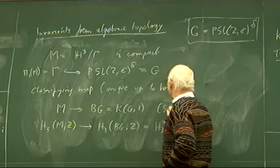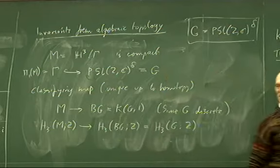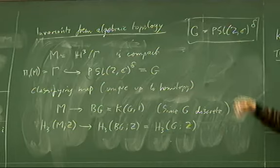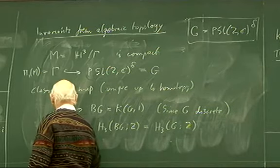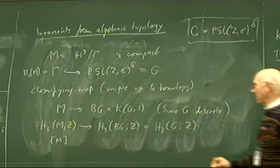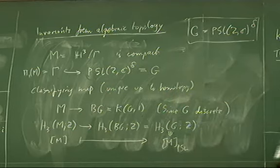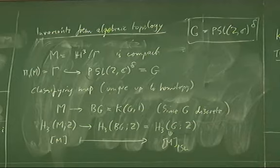This gives us a map of H₃(M; ℤ) to H₃(BG; ℤ). When you take the homology of the classifying space of a group, that's the same as group homology, so we can write this as H₃(G; ℤ). This is the homology you compute by taking a projective resolution of ℤ as a ℤG-module, tensoring that resolution with ℤ, and taking the homology — it's the Tor functor applied to ℤ as a ℤG-module. BG is really K(G,1) since G is discrete.